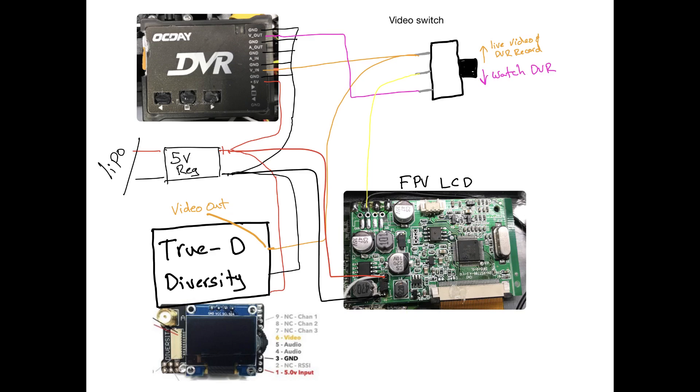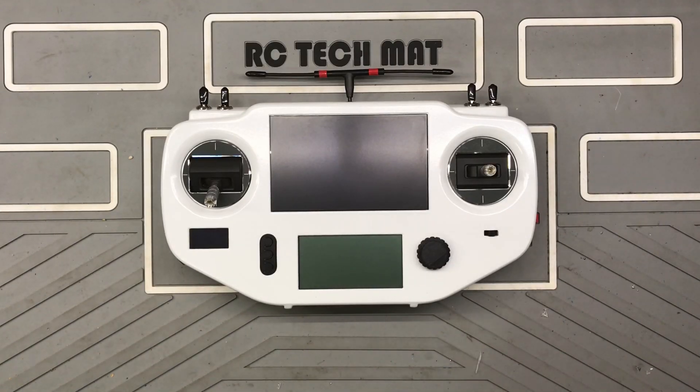Now let's look at the DVR switch and video switch. When we put the switch in the upright position, the video comes from the receiver directly to the LCD, and halfway through it gets diverted also to the DVR so we can record the incoming FPV feed. If you want to review footage to watch a flight from the DVR, we flip the switch down to the purple side. The live feed doesn't go anywhere, but now the recorded DVR feed is being directed to the LCD.